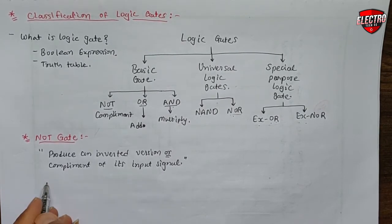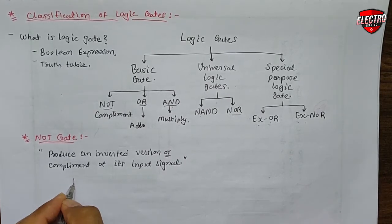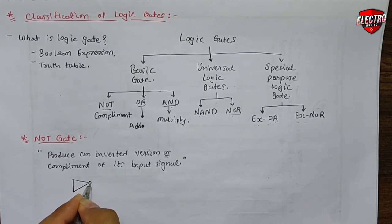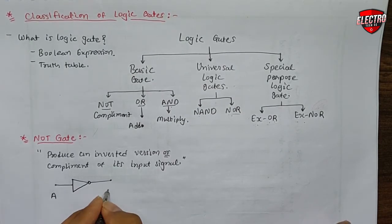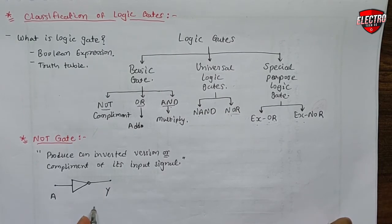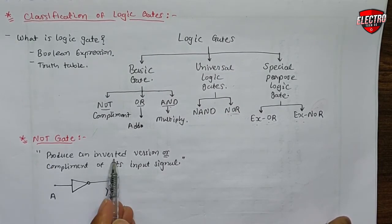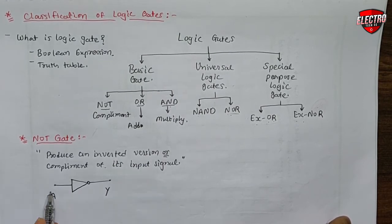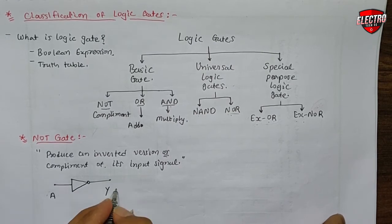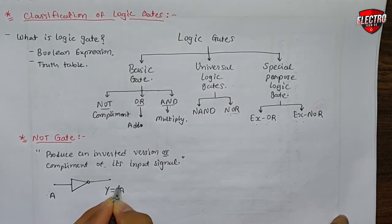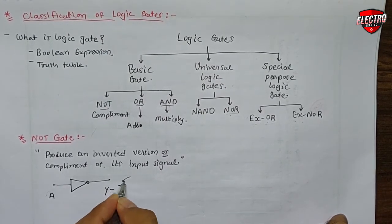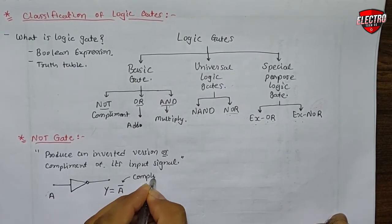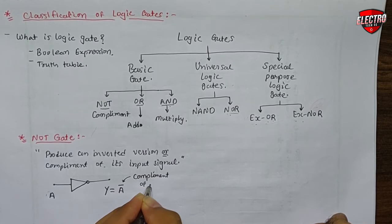The symbol of the NOT gate is a triangle with one bubble on its head. The input signal is, for example, A and the output signal is, for example, Y. The function of the NOT gate is to produce an inverted version or complement of its input, so Y is equal to A complement, where the bar sign indicates the complement of the input signal.